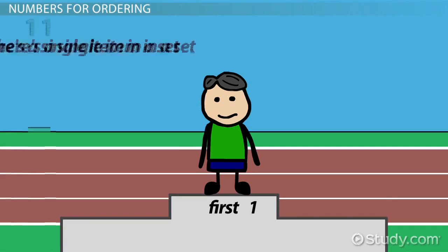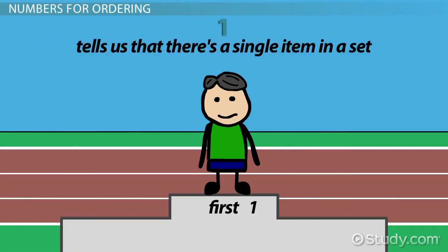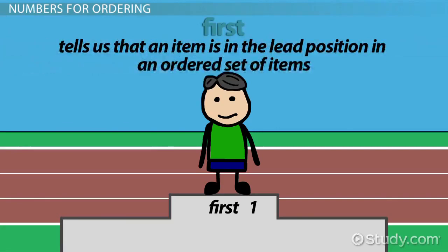The difference is that 1 tells us that there's a single item in a set. 1st tells us that an item is in the lead position in an ordered set of items.